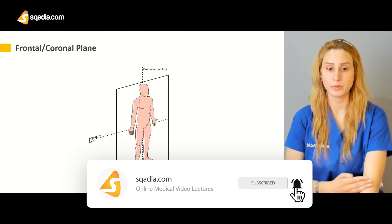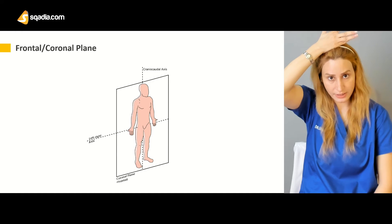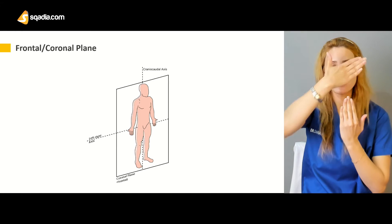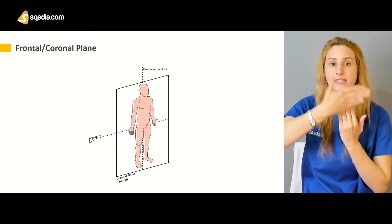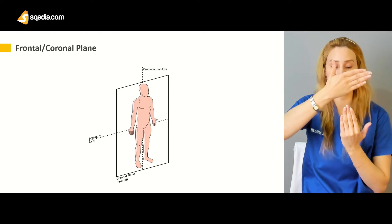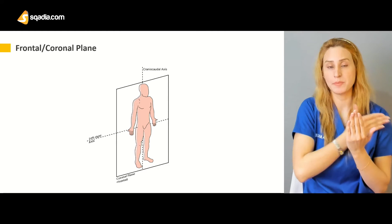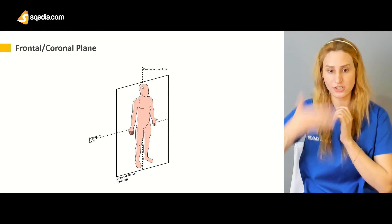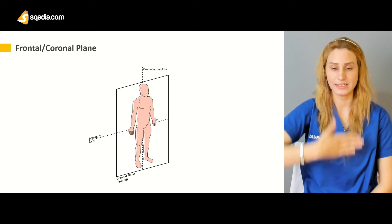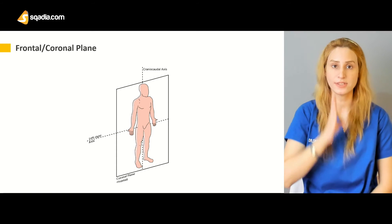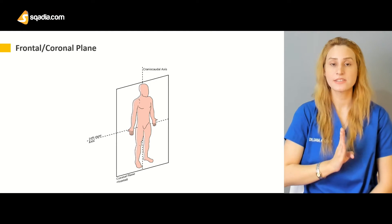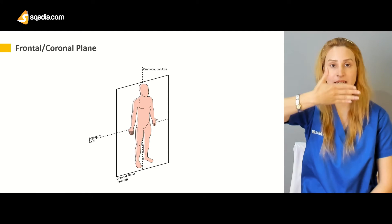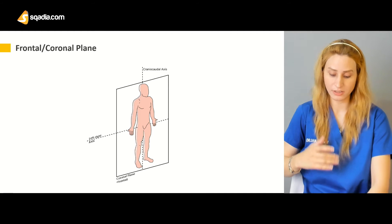Then you have the frontal or the coronal plane. So that means you're dividing your body from here like this. If you cut the body from this plane, that would be the frontal or coronal plane. That means you will have the anterior surface and a posterior surface — posterior would be back and anterior would be front. You can see in this diagram that it is cutting the body like this in a horizontal position.